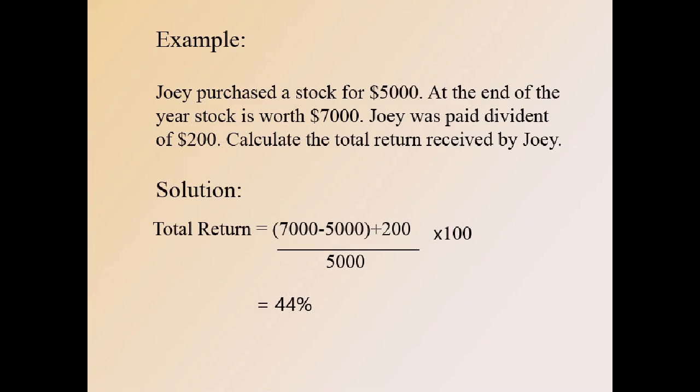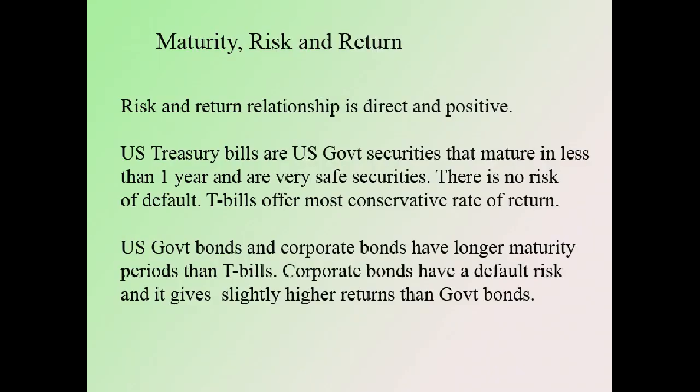Joey gets a 44% return from this investment. There is a direct relationship between risk and return. U.S. Treasury bills are government securities that mature in less than one year and are very safe; they offer the most conservative rate of return and are backed by the full faith and credit of the U.S. government. This security is considered risk-free. U.S. government bonds and corporate bonds have longer maturity periods; corporate bonds have a default risk and give slightly higher returns than government bonds.